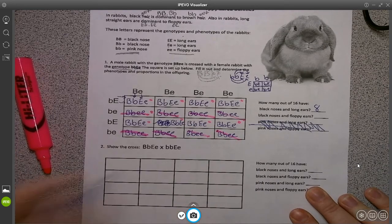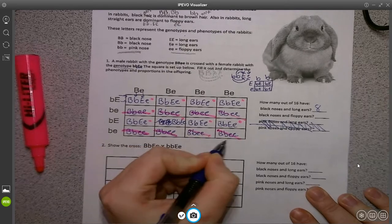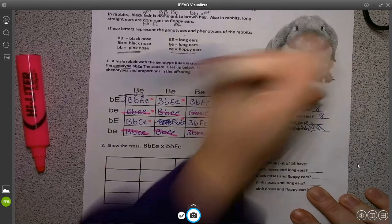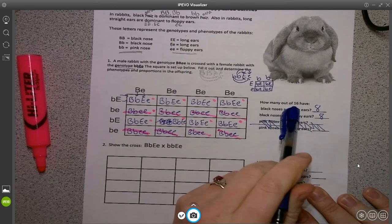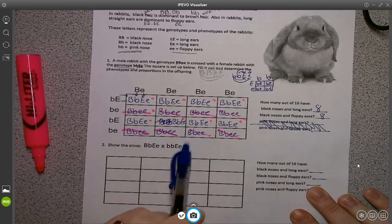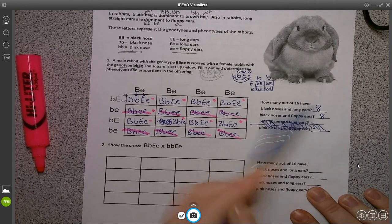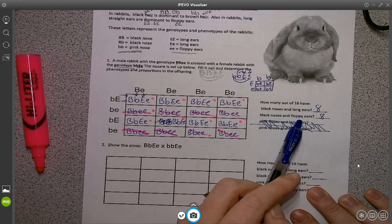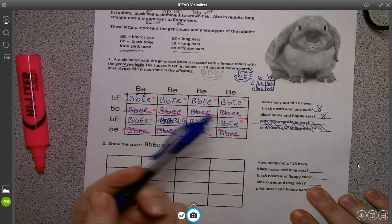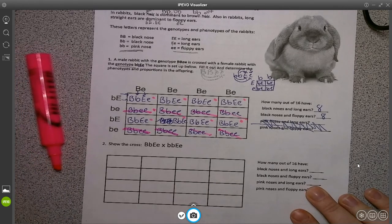We're going to count them. One, two, three, four, five, six, seven, eight. There's eight. Now we're going to triple check our work. We know we're supposed to have 16. We counted. We marked. We crossed. And we're left with eight that have black noses and long ears. And eight that have black noses and floppy ears. We add that together. We get 16. We did it. Ta-da. It's done. Hooray.